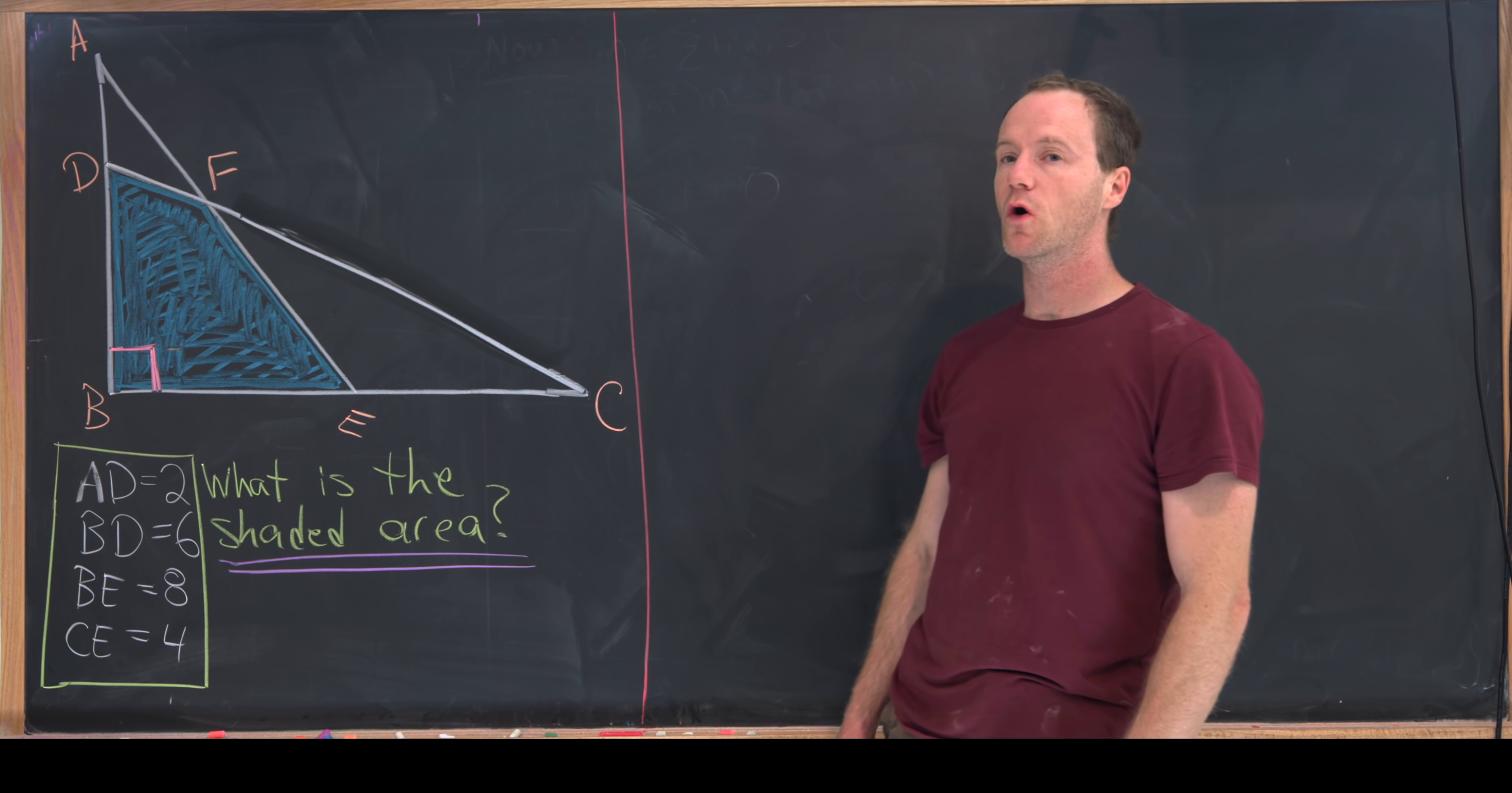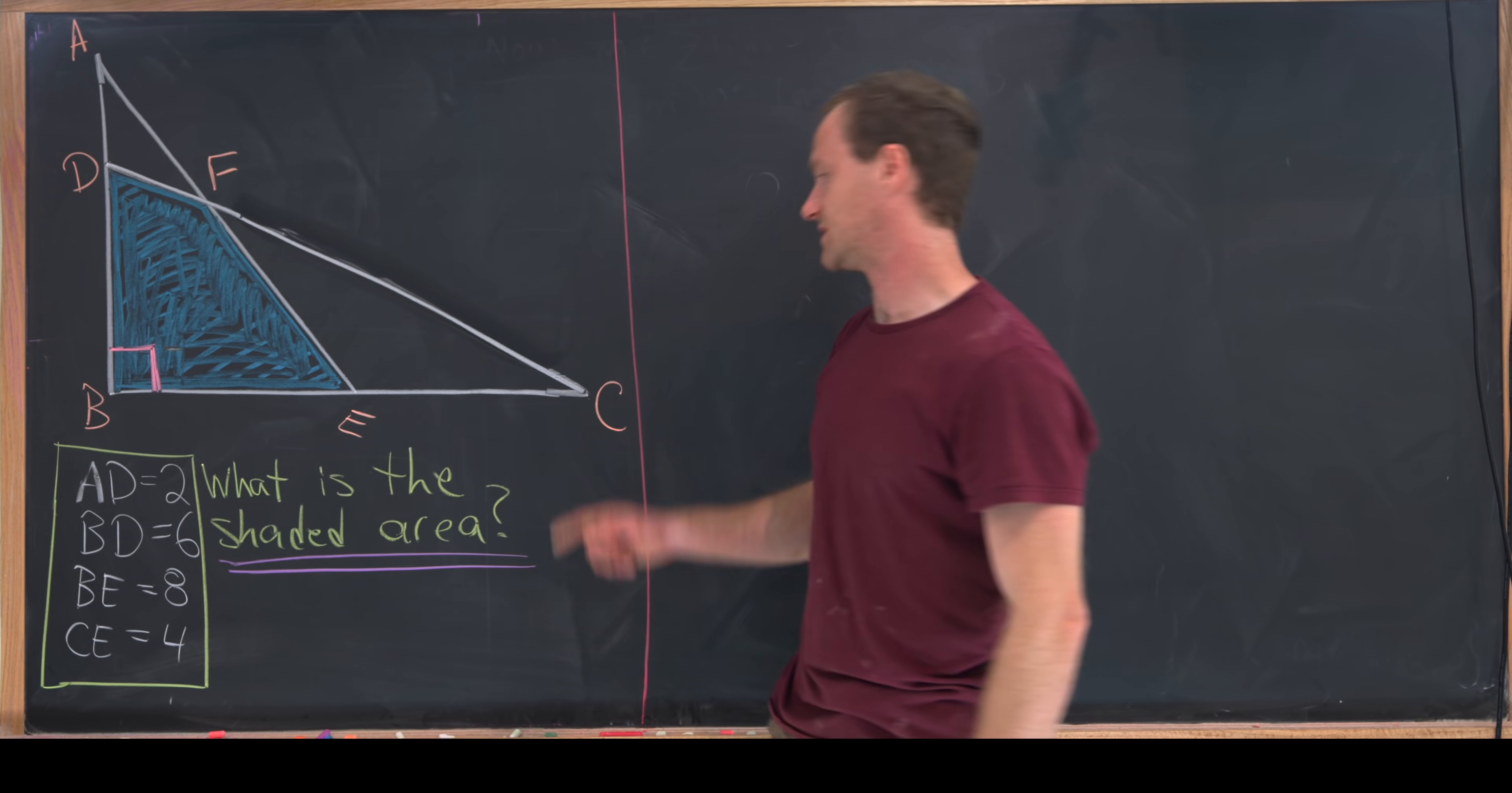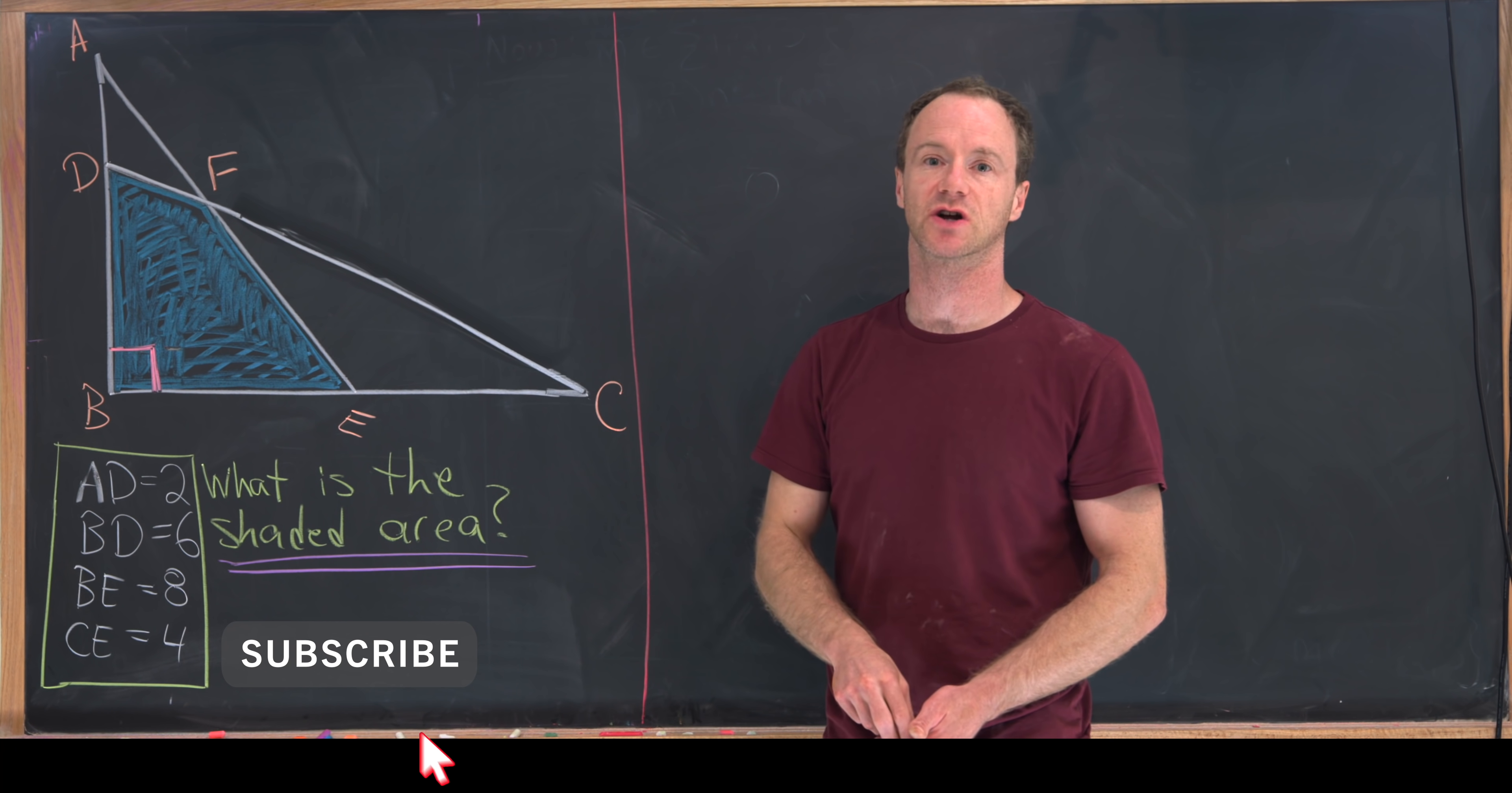So we've got these two overlapping right triangles: A, B, E and D, B, C. They share this right angle which is right here, so it's angle ABE for one of the triangles and angle DBC for the other triangle.